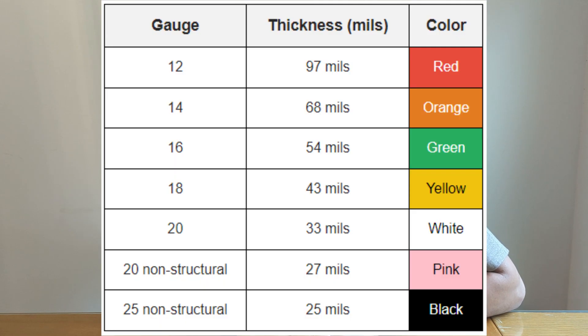Metal studs are often referred to by their gauge. They're available in a variety of different gauges which represents their thickness. The gauge value is measured in mills — thousandths of an inch. Common gauge options are 25, 20, 18, 16, and 14. The gauge greatly affects the stud's strength as well as the load bearing capacity — it's very important in design.